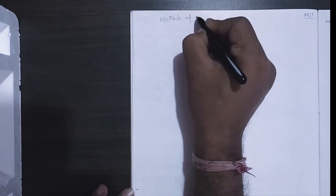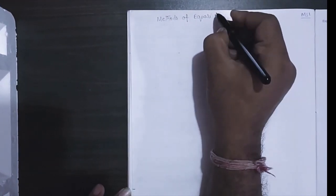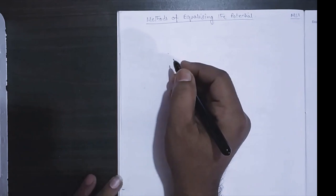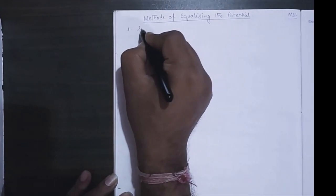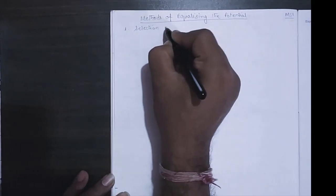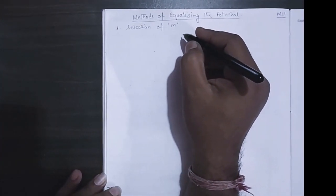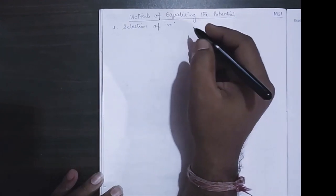So let us start this session with method of equalizing the potential. The first one is selection of m, that is mutual capacity by capacitance of ground.